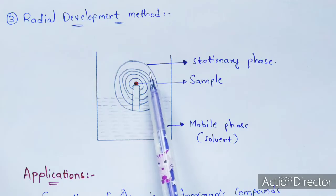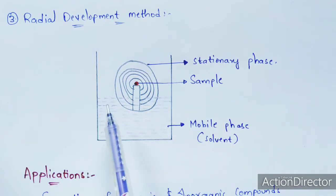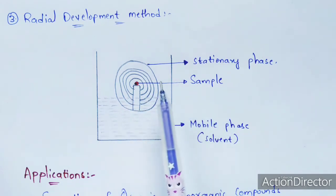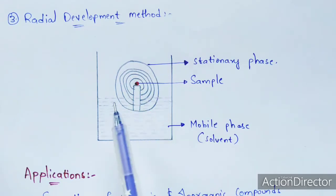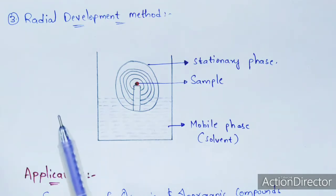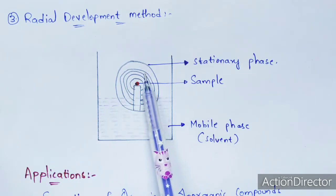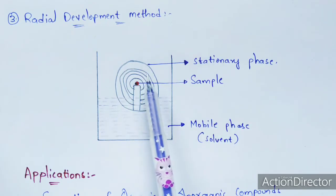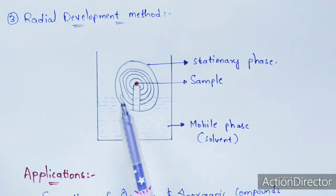In the radial method, the circular paper is dipped in the mobile phase, and separation of molecules occurs throughout the paper in a circular manner. In ascending method, molecules move upward; in descending method, downward; and in radial method, separation is seen in a circular form because the stationary phase (paper) itself is circular.